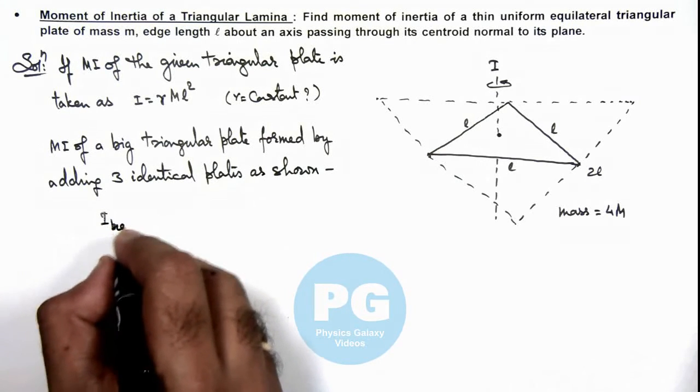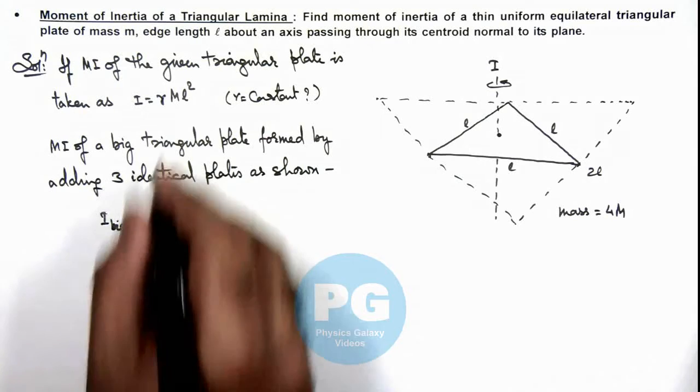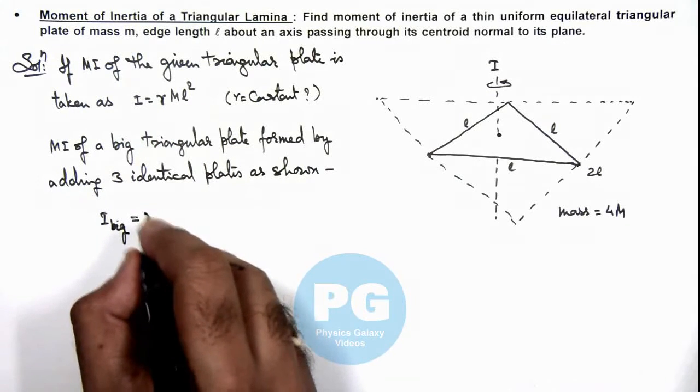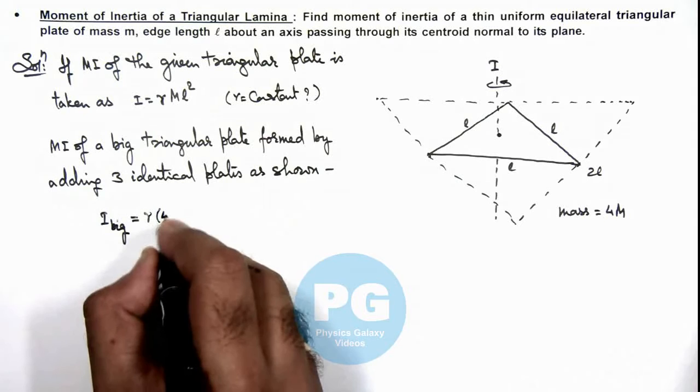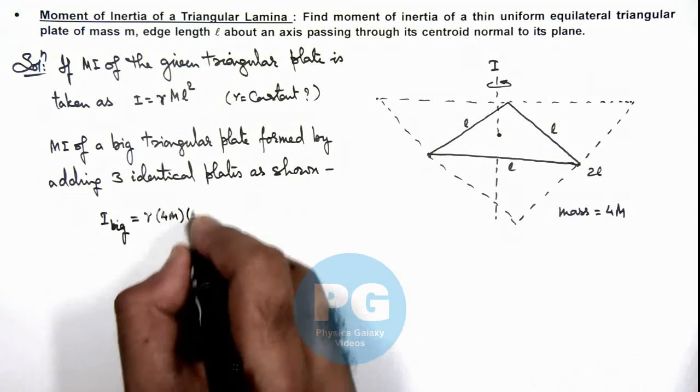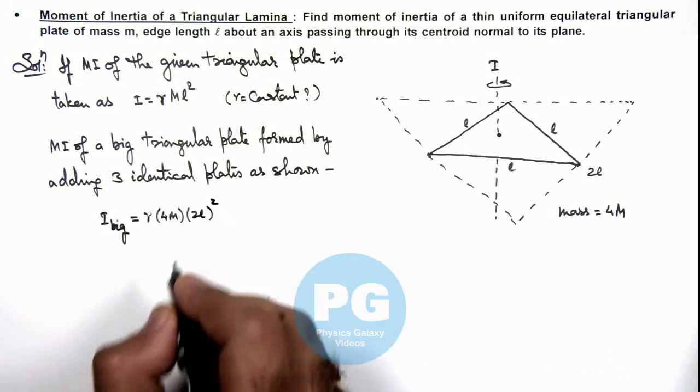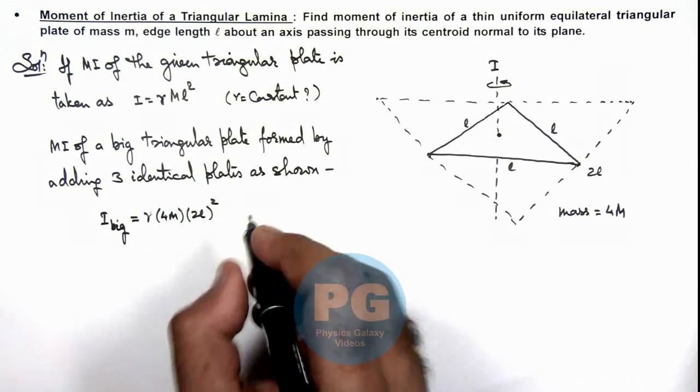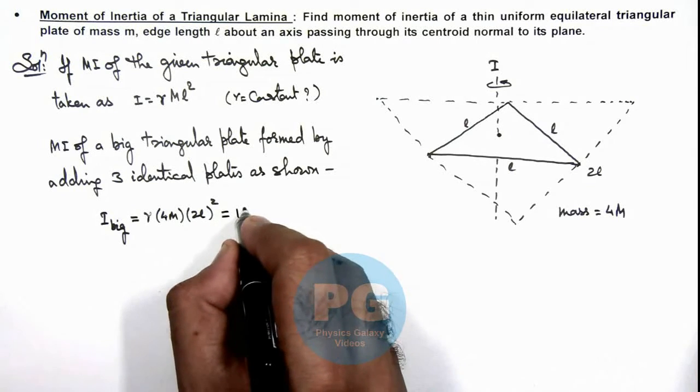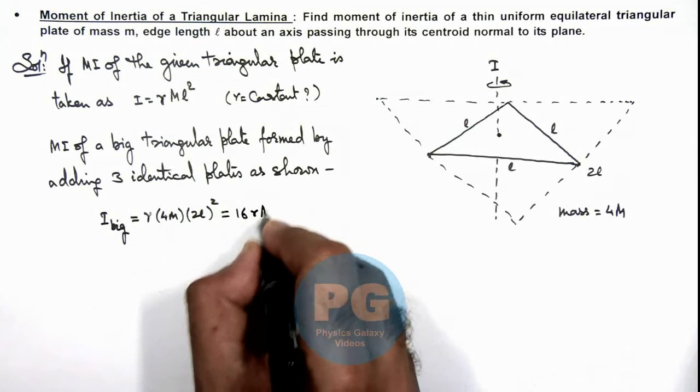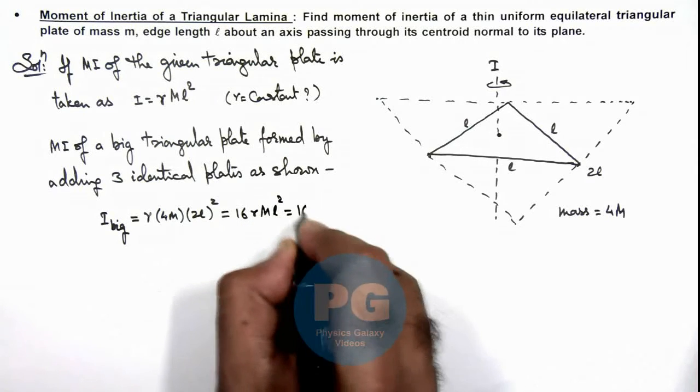I_big should be given by the same expression which is γ times the mass will change to 4m and length will change to 2l whole square. This becomes 16 times γml² or 16I.